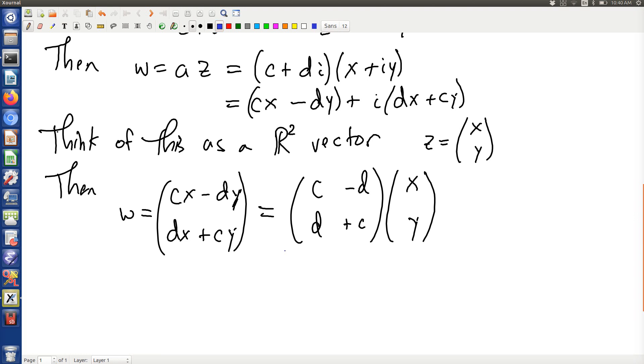You can think of this complex A as being a special two-by-two matrix in R. In particular, what kind of two-by-two matrix? Well, it's not symmetric. It's skew-symmetric.